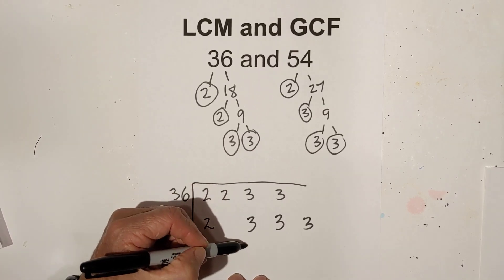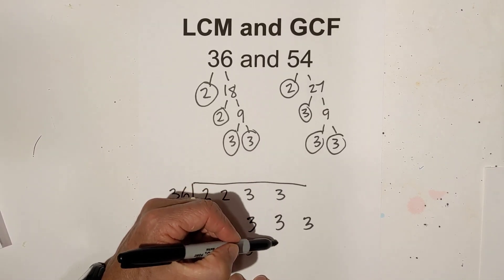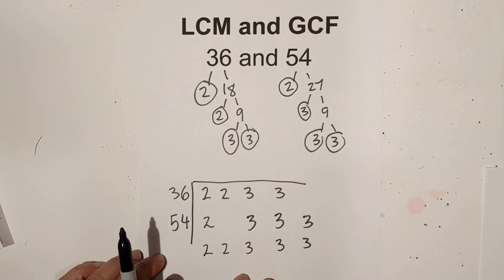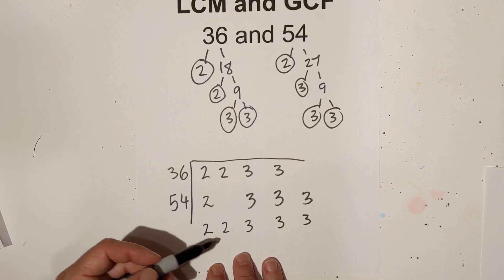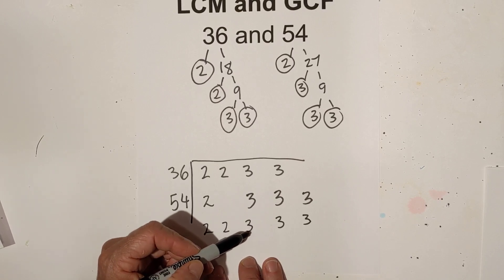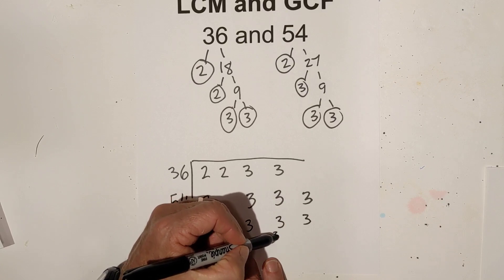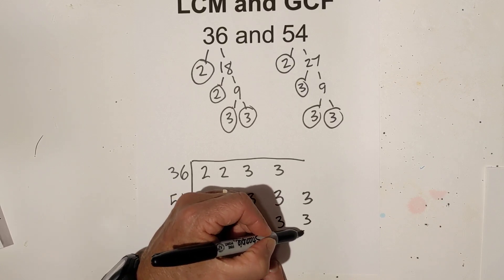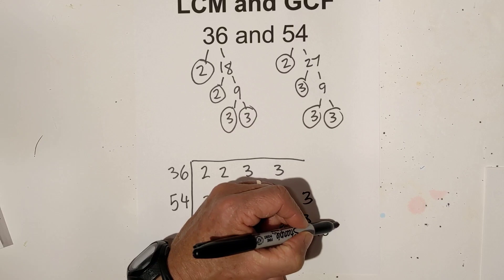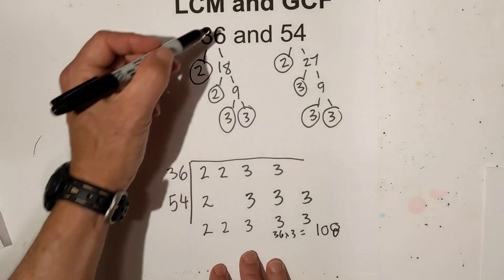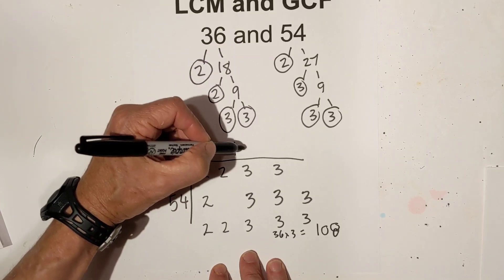There's 2 in this column, so I bring down 1, 3, 1, 3, and 1, 3. Now multiply these numbers together: that gives me 4, 12, 12 times 3 is 36, and 36 times 3 equals 108. So the LCM of 36 and 54 is 108.